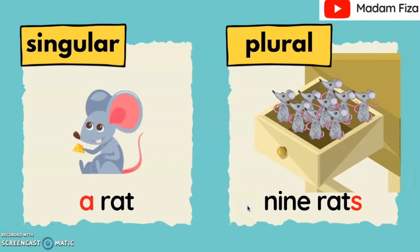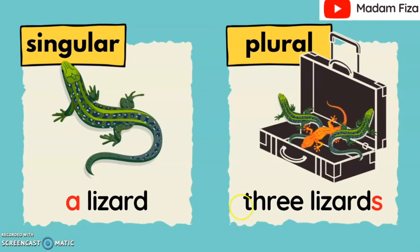Okay, let's read it together. A rat. Nine rats. Alright, let's look at the lizard. A lizard is singular. Three lizards are plural.